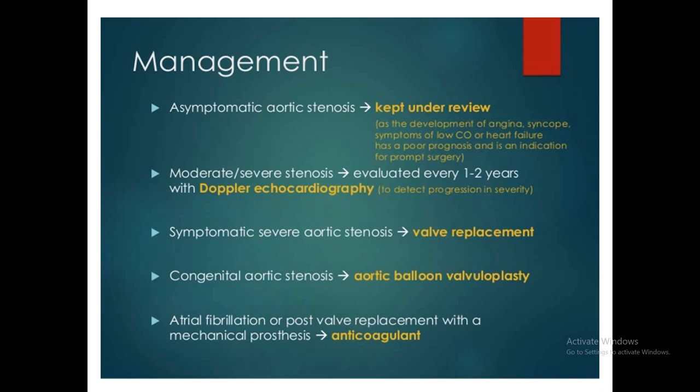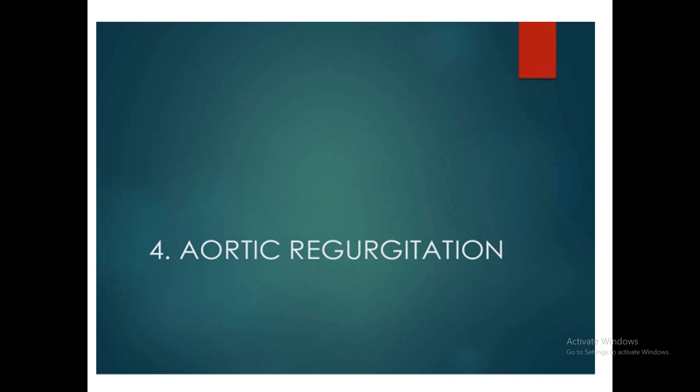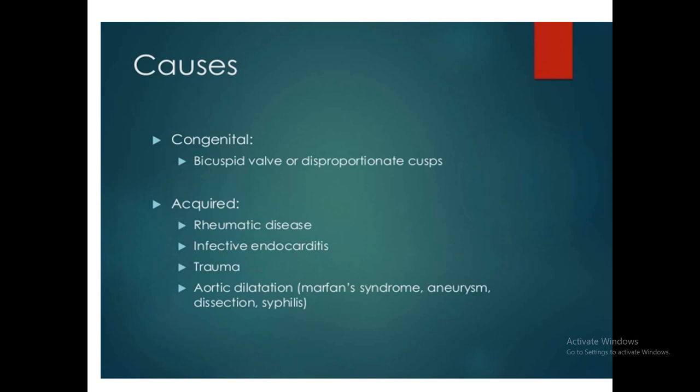Aortic regurgitation: the valve is insufficient to hold blood from the aorta, so blood from the aorta comes back into the left ventricle rather than going to the peripheral vessels. Causes include congenital bicuspid valve with disproportionate cusps, rheumatic disease (the commonest cause), infective endocarditis, trauma to the chest, aortic dilatation, Marfan syndrome, aneurysm, syphilis, and dissection of the aorta causing acute aortic regurgitation.